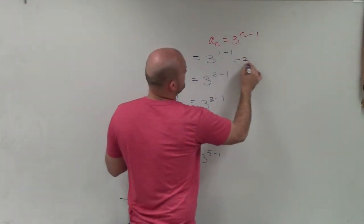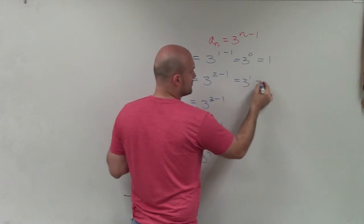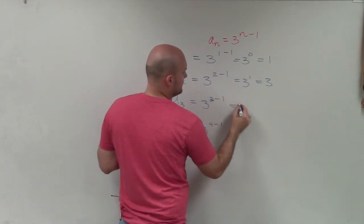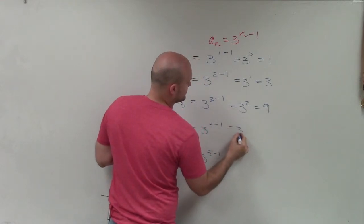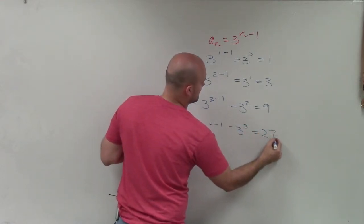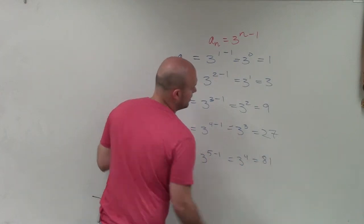So therefore, this becomes 3 to the 0 power, which equals 1. This becomes 3 to the first power, which is equal to 3. This becomes 3 squared, which is equal to 9. This becomes 3 cubed, which is equal to 27. And this becomes 3 to the 4th, which is equal to 81.